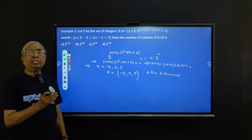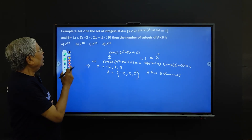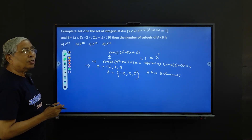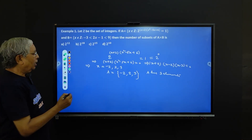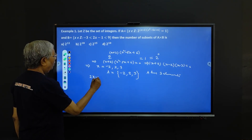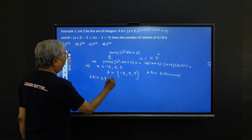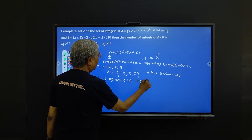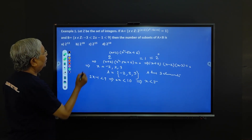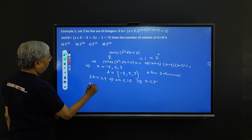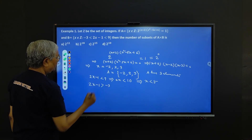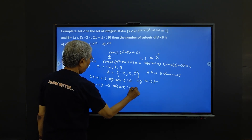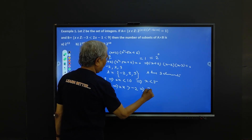Now we want to find the elements of set B. B is the set of all x in Z satisfying -3 < 2x - 1 < 9. We break this into two inequalities: 2x - 1 < 9 implies 2x < 10, so x < 5. And 2x - 1 > -3 implies x > -1.